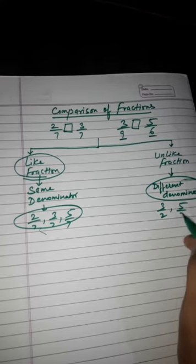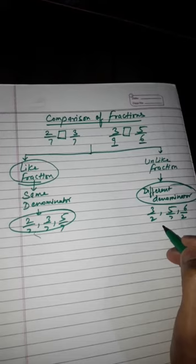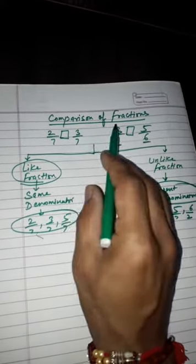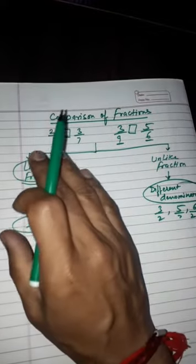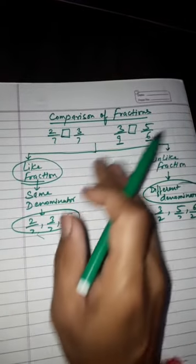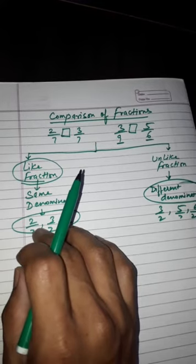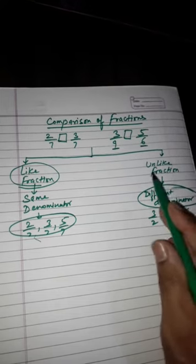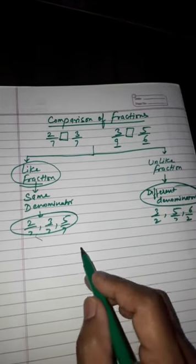Unlike fractions are those having different denominators. For example: three upon two, five upon seven, six upon two. Under comparison of fractions, we will discuss both types — same denominator fractions, which are like fractions, and different denominator fractions, which are unlike fractions.